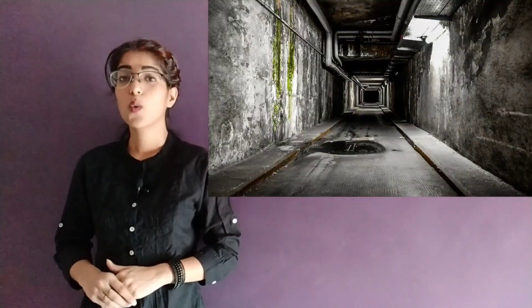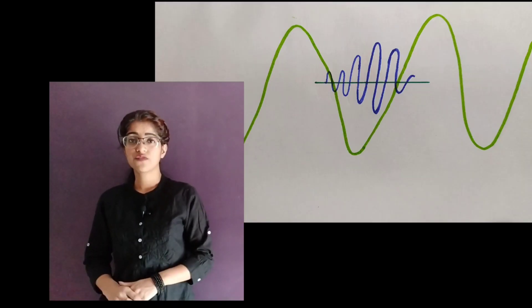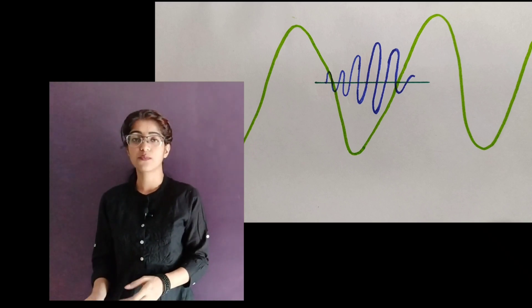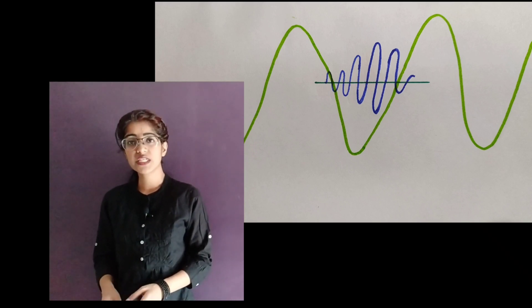Anywhere door? No! Quantum tunnelling! We know that matter can behave both like a particle and a wave, and in order to understand quantum tunnelling we are going to consider its wave nature. But why the wave? Well, according to the quantum superposition principle, a particle can occur simultaneously at several locations when an observation is not taken. At a definite point of time, the positions of a particle where it can possibly be is actually represented using a wave function.